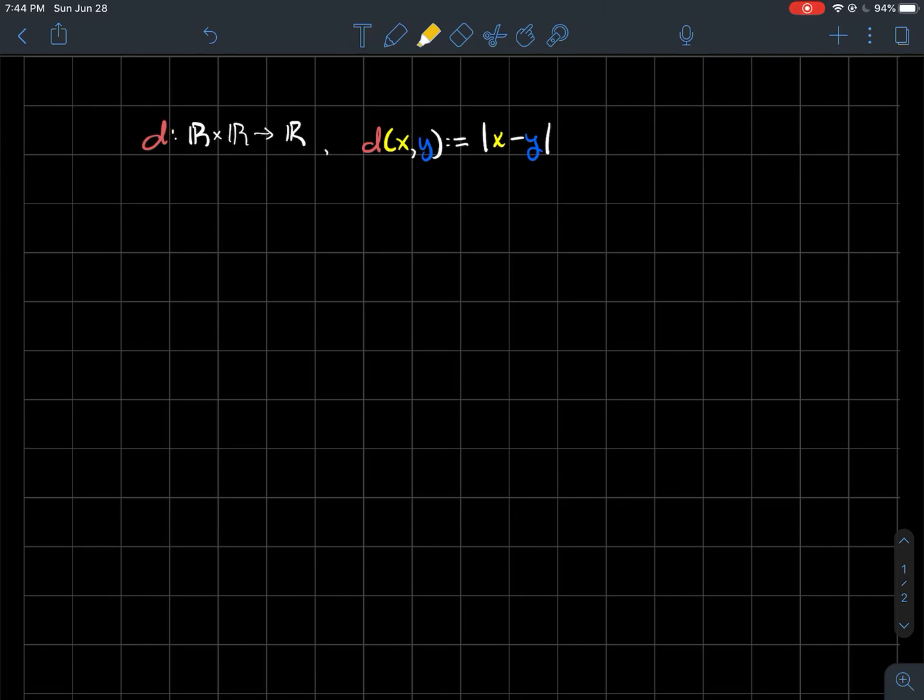I'm going to let d be the usual metric on the real numbers. So remember d is this function on R cross R to R. And what I mean by the usual metric, the distance between two real numbers should just be the absolute value of the difference. And I'm going to let rho, this Greek letter rho, be a metric on the plane. So rho is a distance between two points in the plane. Should spit out a real number is what that says.